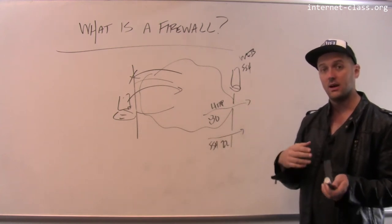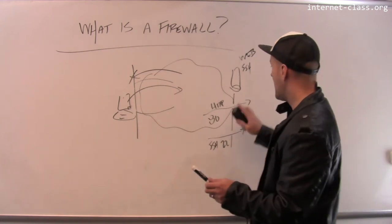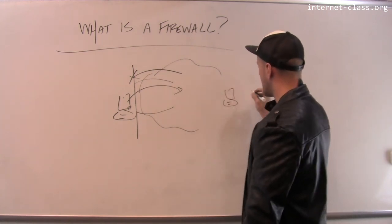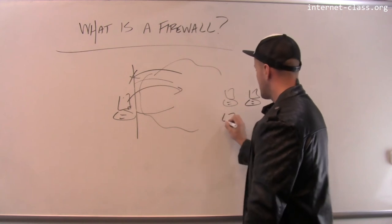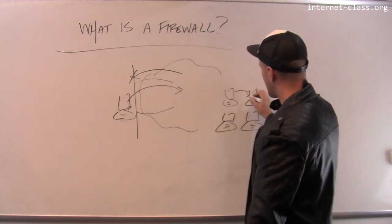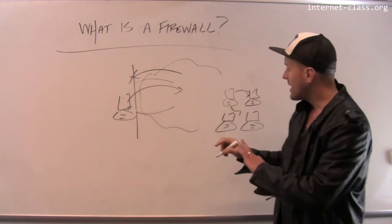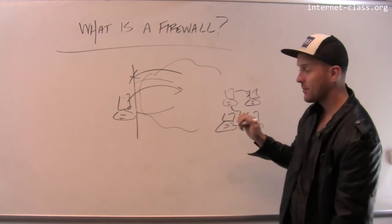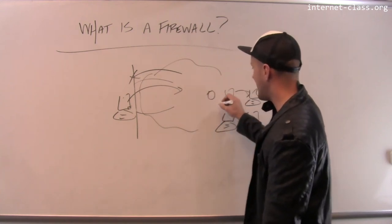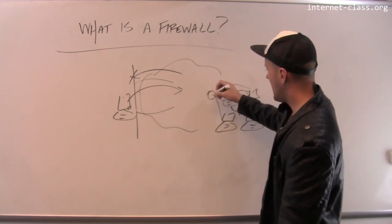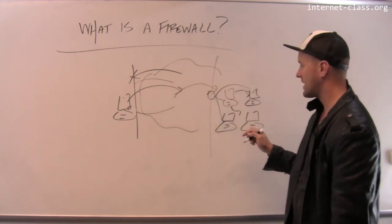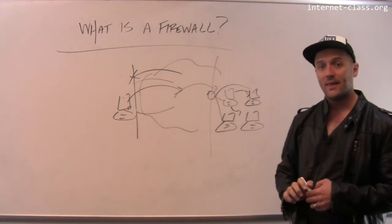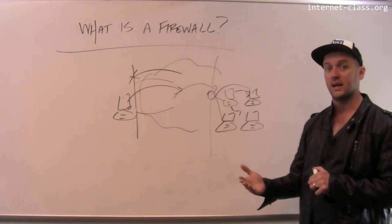Firewalls are also frequently used in enterprise network security. I might have a group of machines connected to each other running certain services where they need to make connections to each other on certain ports, but I don't want any outside traffic from the public internet to access those connections. In that case, on the router that connects my network to the rest of the internet, I would install a firewall that prevents certain connections from being established from outside my private network, allowing me to run services inside that private network that wouldn't be exposed outside of it.